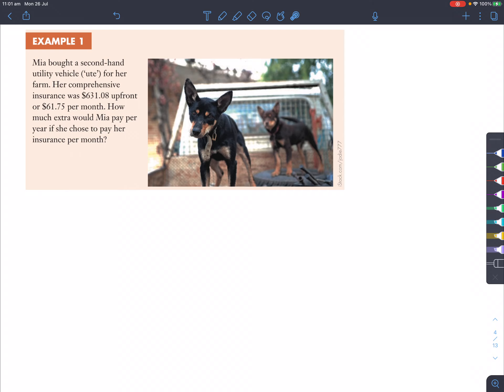So let's get to the math. If she pays per month, then she would have to pay $61.75 times 12, which is basically $741. So let's compare these two amounts, $741 and $631.08 up front. Now, the difference or extra paid will be how much the $741 is compared to the $631.08, and that will be a difference of $109.92.